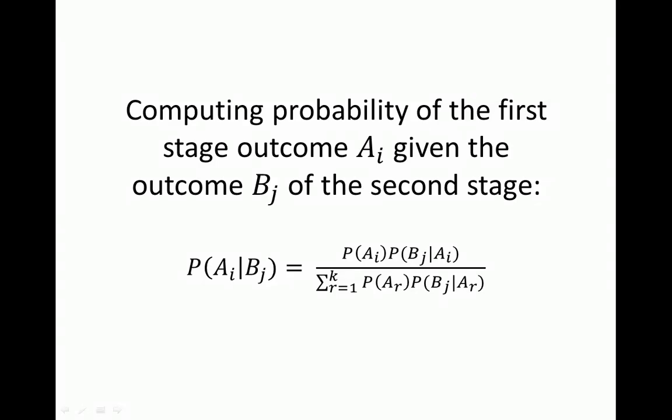In this video I will talk about a tool for computing the probability of the first stage outcome of a two-stage experiment. We're interested in a formula for the first stage outcome Ai given the outcome Bj of the second stage in a two-stage experiment. I will show that the conditional probability of the first stage outcome Ai given the second stage outcome Bj is equal to this formula here.